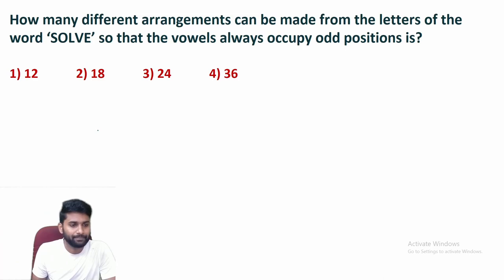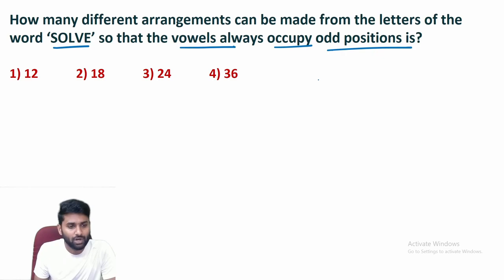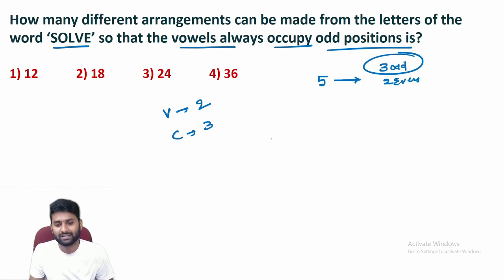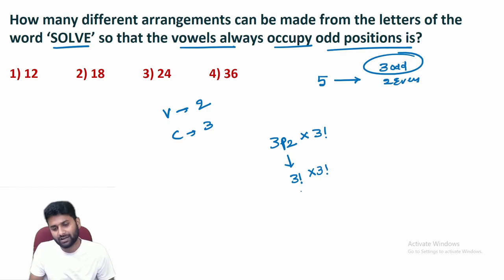Next: how many arrangements can be made from the letters of SOLVE so that vowels always occupy odd positions? Total five letters, five positions — three odd, two even. Vowels are O and E (two), consonants are S, L, V (three). We have three odd positions but only two vowels, so arrangement is 3P2. Remaining three consonants in three positions = 3!. Total = 3P2 × 3! = 6 × 6 = 36.